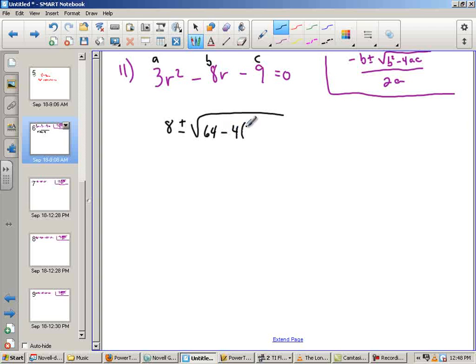Minus 4 times A, which is 3, times C, which is negative 9. And that's all going to be divided by 2 times A, which is 6.